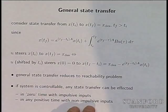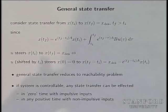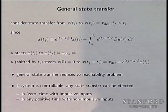For continuous time, it's a lot easier. The system is either controllable or uncontrollable — you don't get the subtleties of the discrete time case. If it's controllable, you can get from anywhere to anywhere else in arbitrarily small positive time, possibly with a very large input. You can do it in zero time if you allow impulsive inputs.